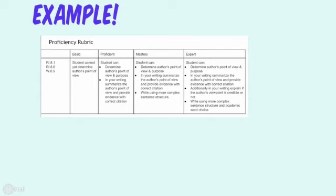This particular unit focused on three separate standards: 8.1, which is about textual support and using evidence in your analysis; 8.6, which looks at author's purpose and point of view; and a writing standard for written analysis of something you've been reading. In the rubric, we move from proficient to mastery to expert. Proficient is roughly C-level work, mastery is B-level, and expert is above and beyond — A-level work. We try not to assign letter grades in the mastery model, but parents and students have a hard time moving beyond those basic constructs.